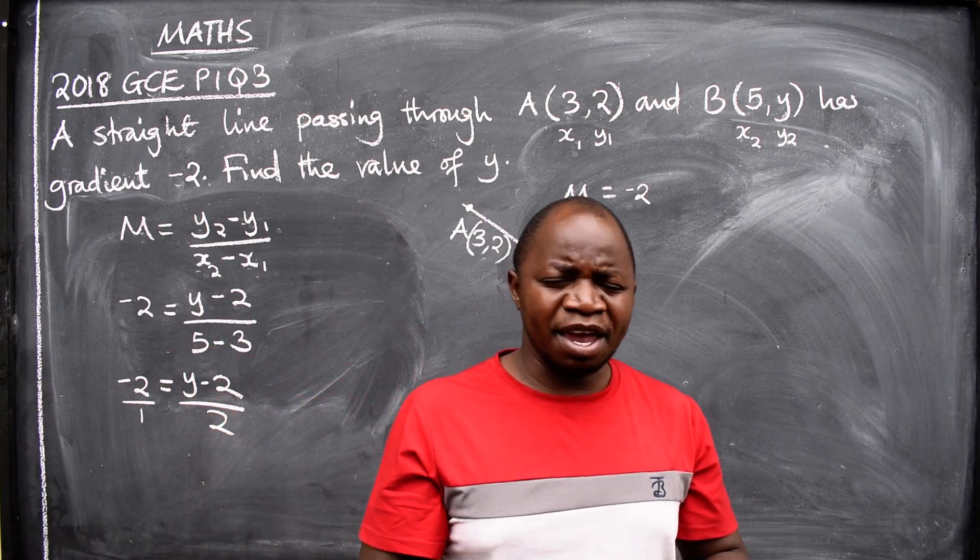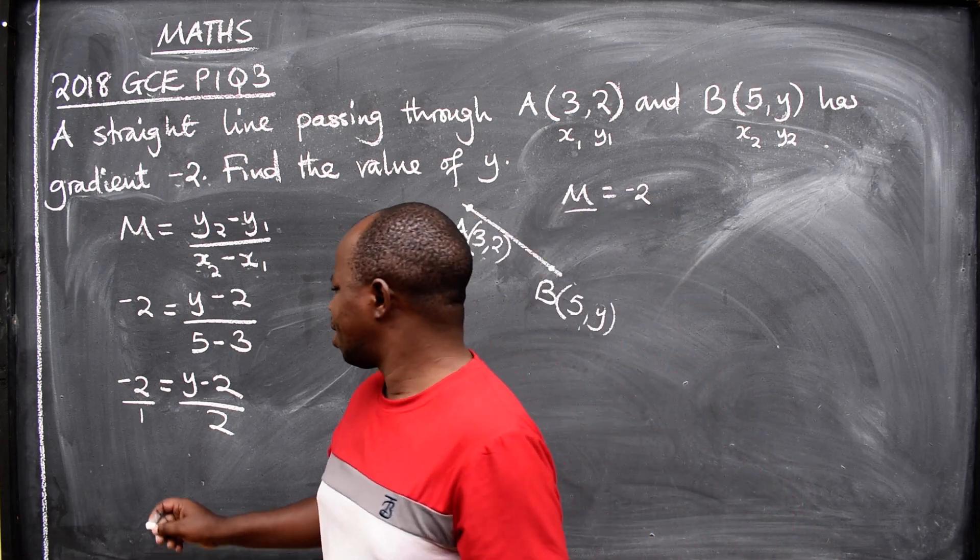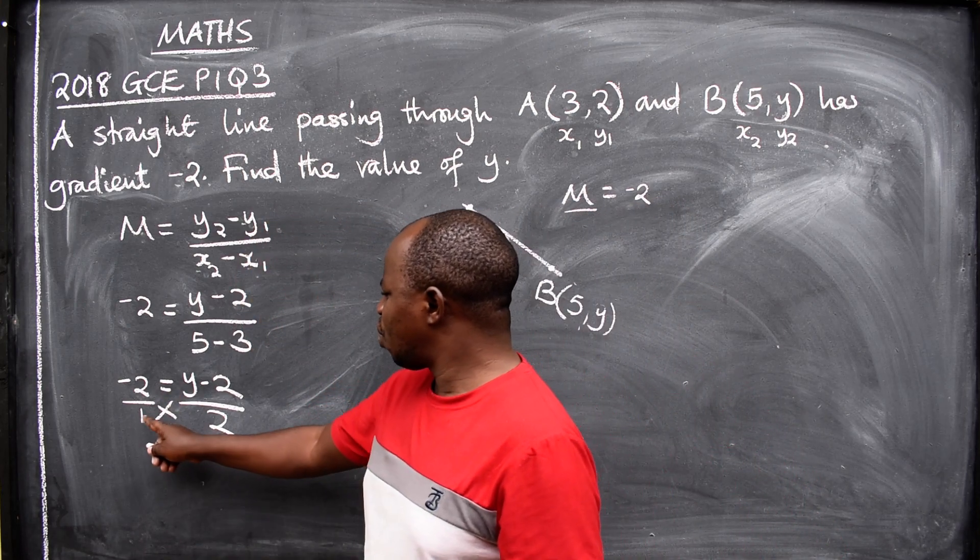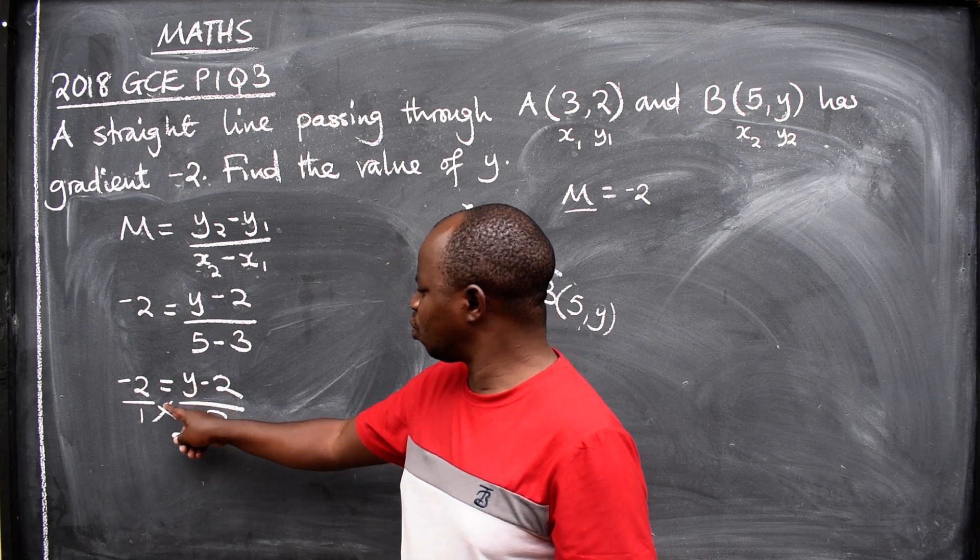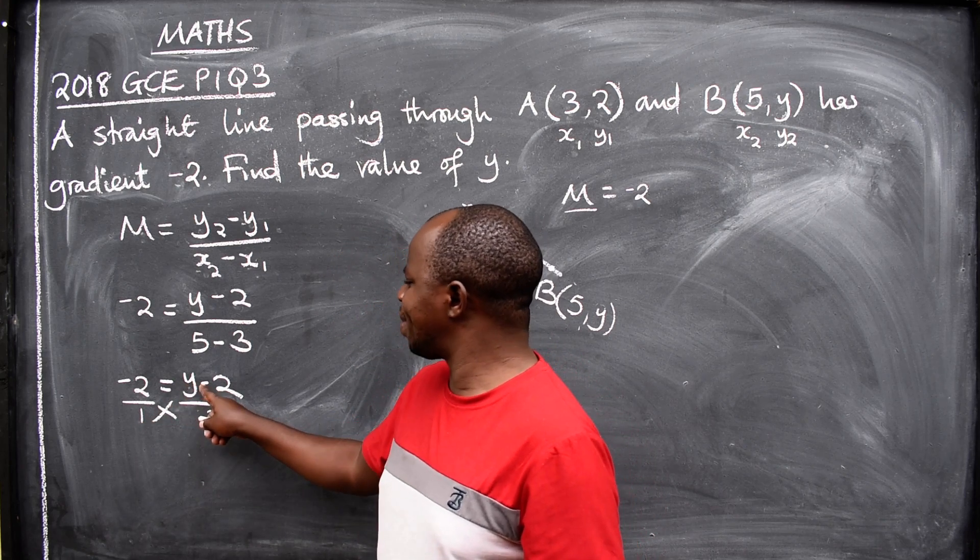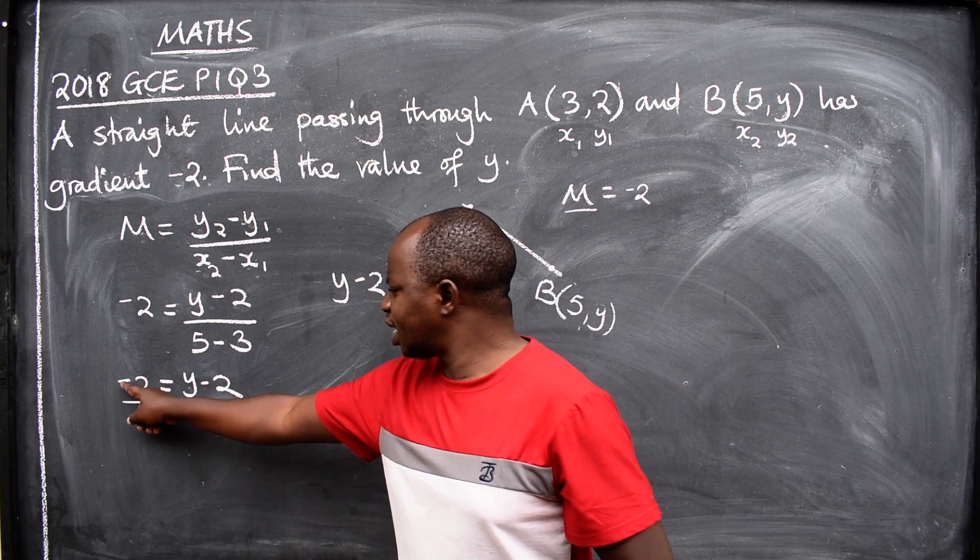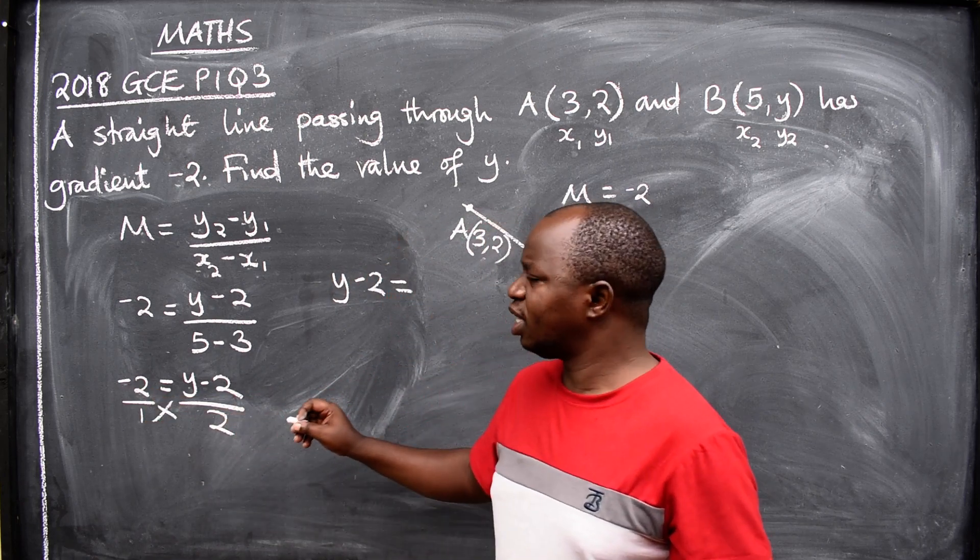So when you cross multiply this, it will now be 1 times (y - 2). This will give us y - 2 = -2 times 2, which gives us y - 2 = -4.